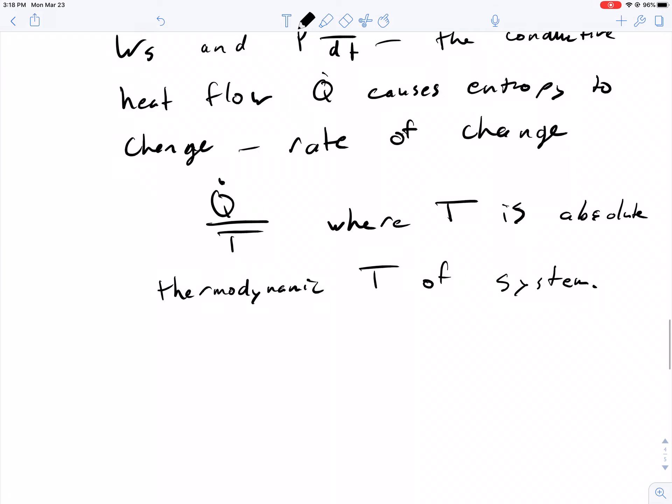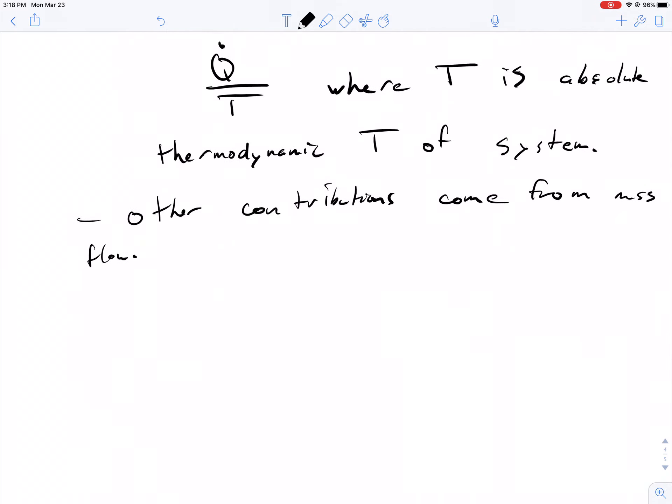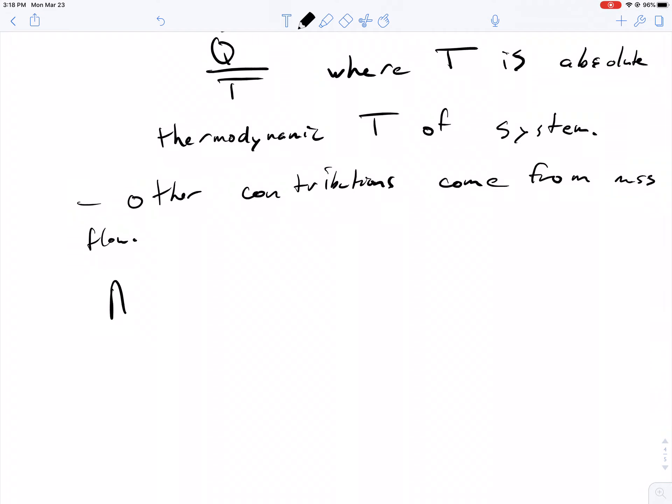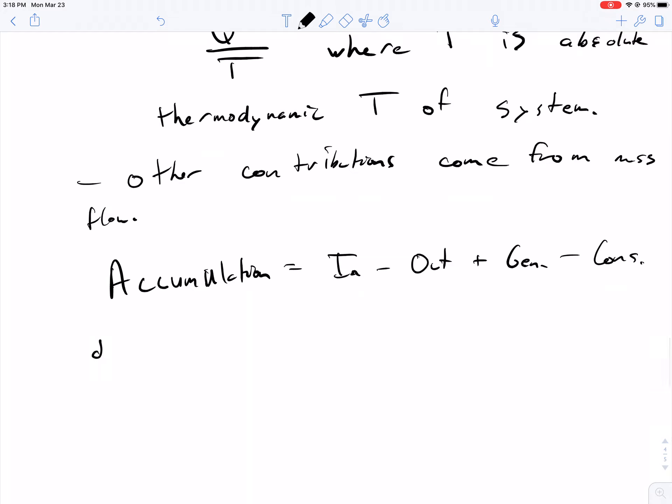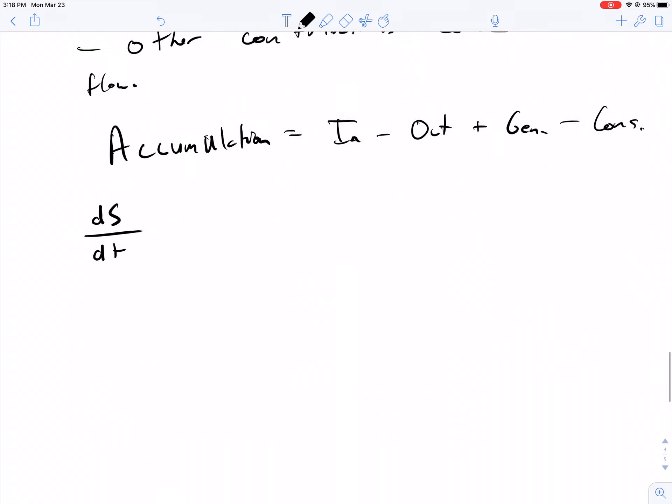The other way you can have entropy flow is through mass flow. So if we account for all these different contributions and go back to our universal equation for any quantity—accumulation equals in minus out plus generation minus consumption—we end up with this differential equation for entropy. Let me slide this up so you can see it clearly.